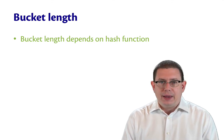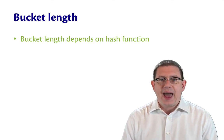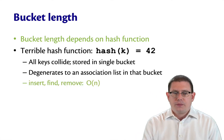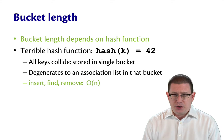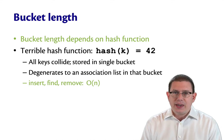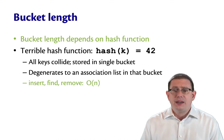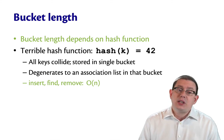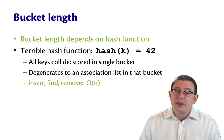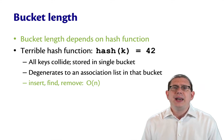Well, the bucket length is going to depend on the hash function. For example, here's a terrible hash function. Suppose that the hash of a key K, no matter what the key is, is just 42. So this is just a constant function. What that would mean is that all keys collide and are stored at the same bucket.